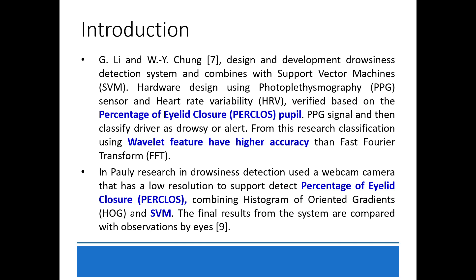From that research, classification using wavelet features had higher accuracy than fast Fourier transform. In Pauli's research on drowsiness detection, a webcam camera with low resolution was used to support the percentage of eyelid closure, combining histogram of oriented gradients and SVM. The final results from the system were compared with visual observations.